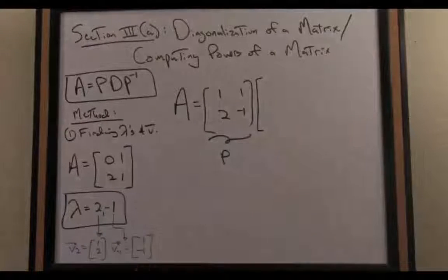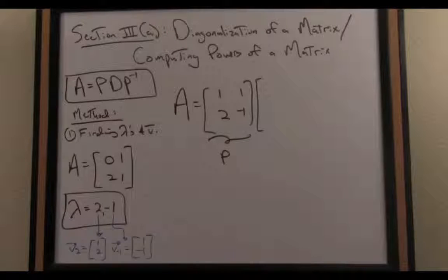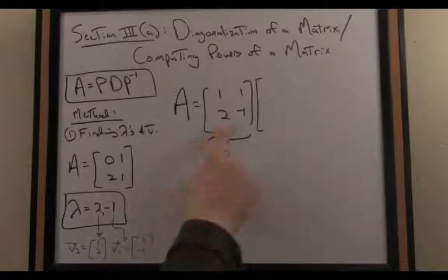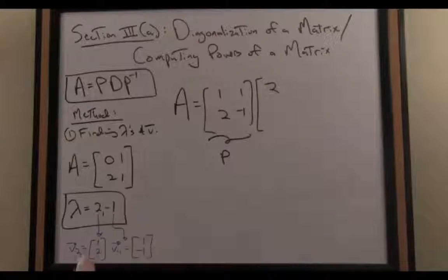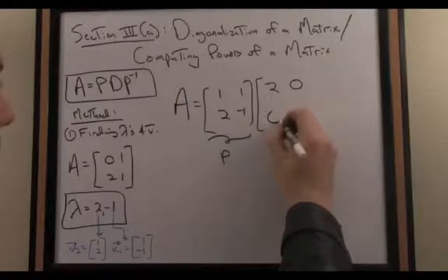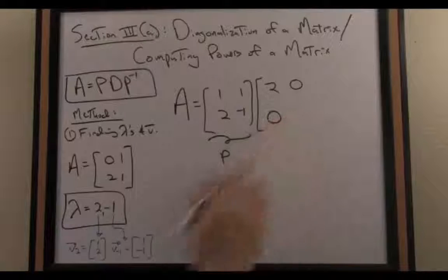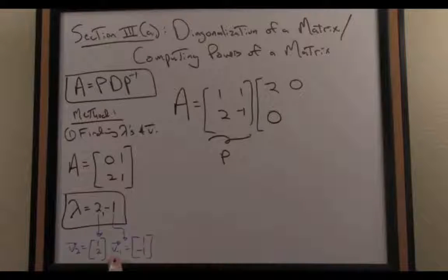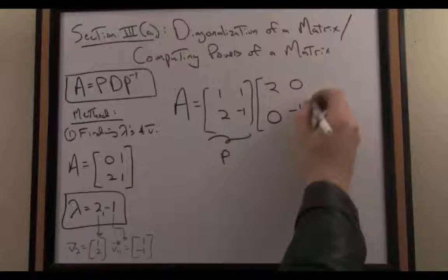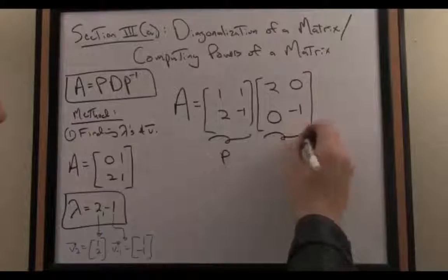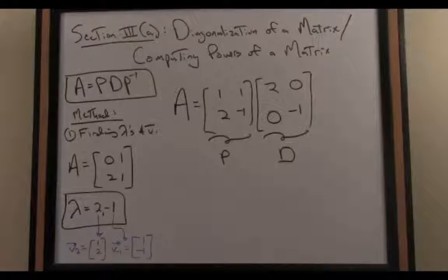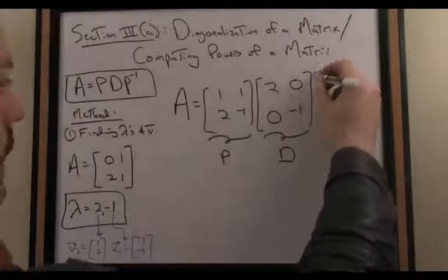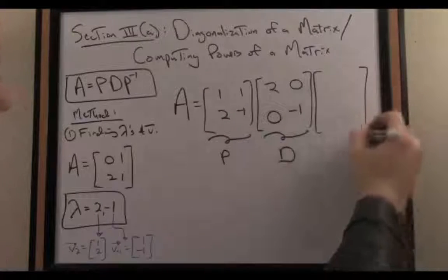And then importantly, I write the diagonalized matrix, or the diagonal matrix here, in terms of the eigenvalues in the same order in which I listed these eigenvectors. In other words, I have to list the eigenvalue 2 first, and that goes on the diagonal component there. And then in the second column, I list the eigenvalue associated with the second listed eigenvector, which is of course -1. So there is my diagonal matrix D, maintaining the same order of the eigenvectors listed in P. And then lastly,